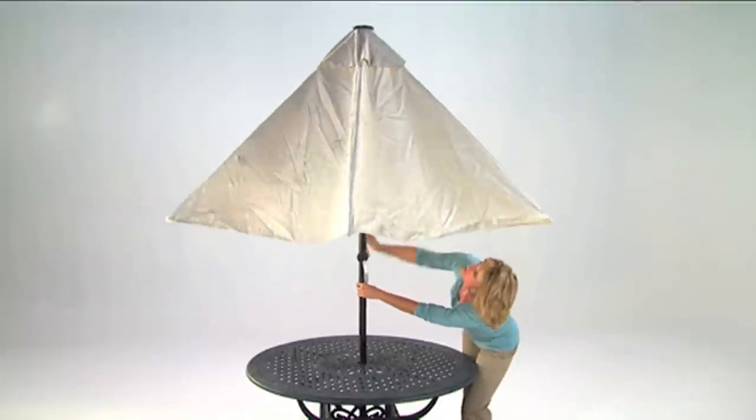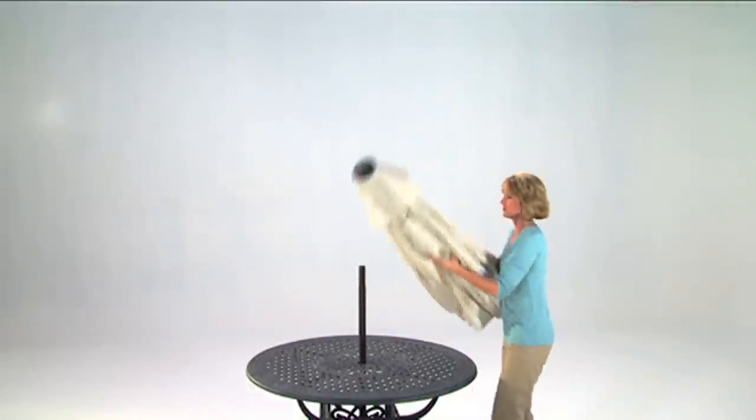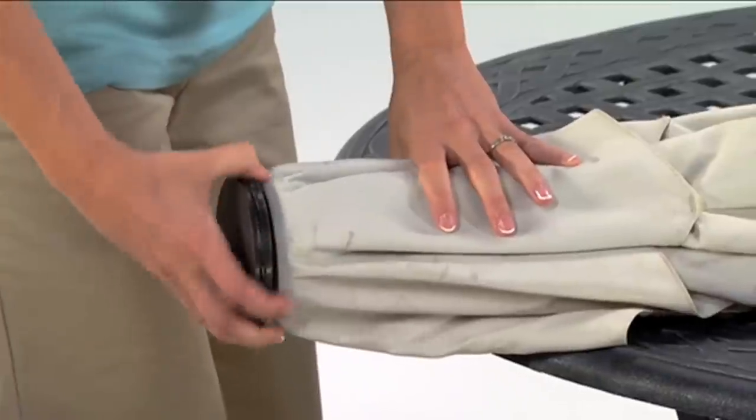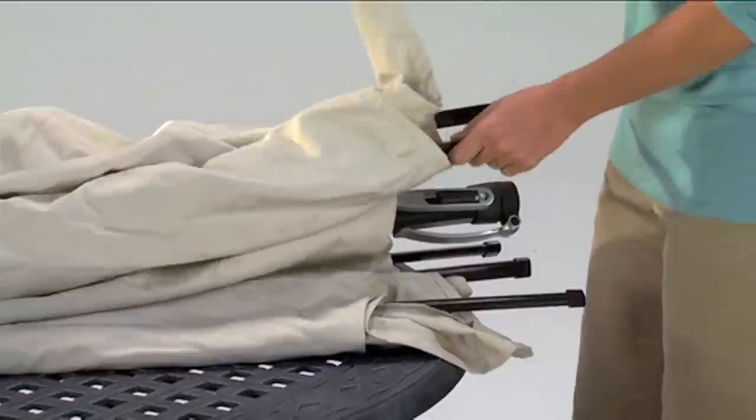First, close your umbrella and remove the lower pole section. Next, lay the umbrella on top of your table and remove the finial cap. Then, remove your umbrella's canopy and set it aside.